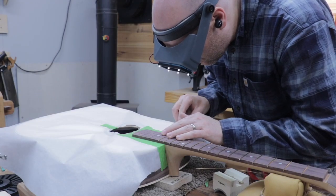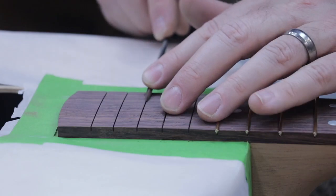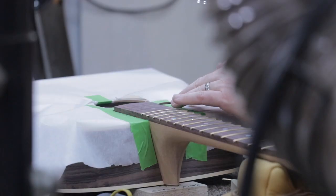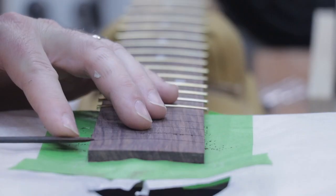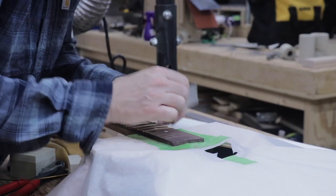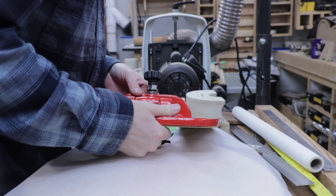With the fretboard radiused, I added the EVO gold frets. I began by giving each fret curve a slight bevel so the fret wire would seat properly. After cutting the frets to length, I tapped them into place with my fret hammer.